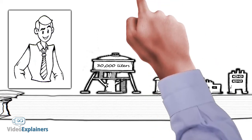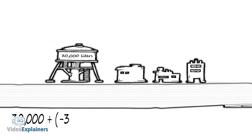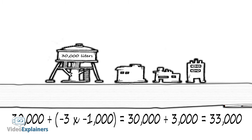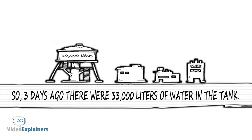The full calculation is 30,000 plus, in parentheses, negative 3 times negative 1,000. So three days ago, there were 33,000 liters of water in the tank.